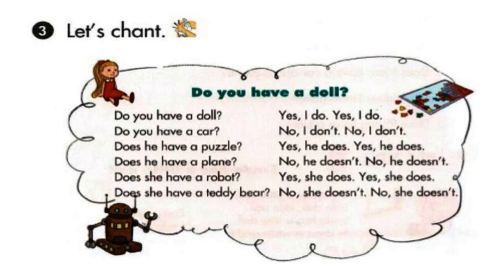One, two, three, four. Do you have a doll? Yes, I do. Yes, I do. Do you have a car? No, I don't. No, I don't. Does he have a puzzle? Yes, he does. Yes, he does. Does he have a plane? No, he doesn't. No, he doesn't. Does she have a robot? Yes, she does. Yes, she does. Does she have a teddy bear? No, she doesn't. No, she doesn't.